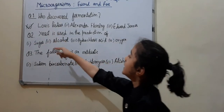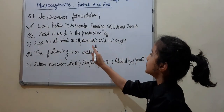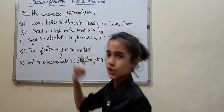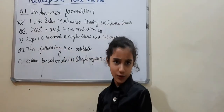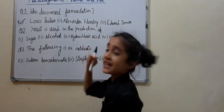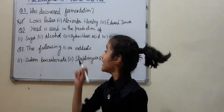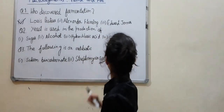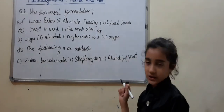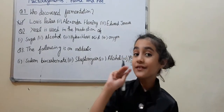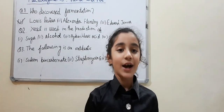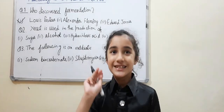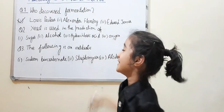Question number 2: Yeast is used in the production of — Number 1, sugar; Number 2, alcohol; Number 3, hydrochloric acid; or Number 4, oxygen. I will give you 3 seconds, your time starts now.